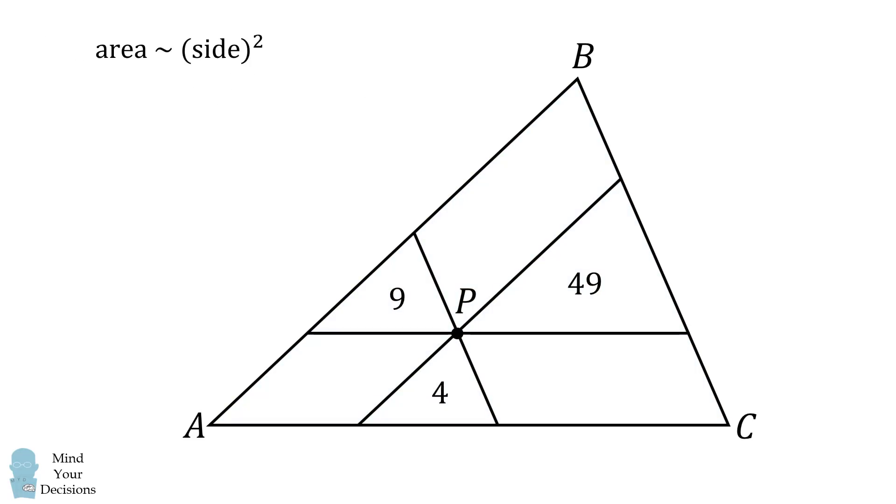The area of a triangle is proportional to its side length squared. Another way of saying this is that the square root of the area is proportional to the side length of the triangle.